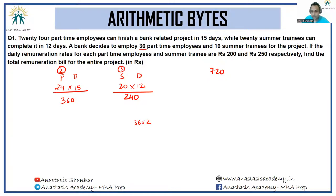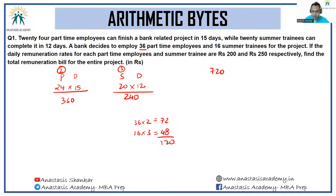So the rate at which work is getting done is 120. Therefore it takes 6 days to complete the project.